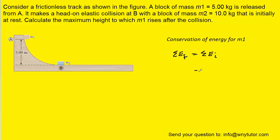Let's talk about the initial energy first. Now the mass marked m1 is released from rest at point A, so that means there will be no kinetic energy since the block is not moving.